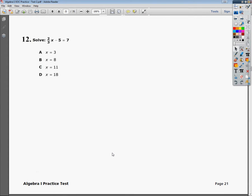This is the Tennessee End of Course Algebra 1 Practice Test Number 2, Question Number 12. The question says 2 thirds x minus 5 equals 7. All they want you to do is solve it.